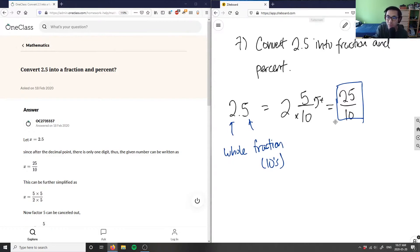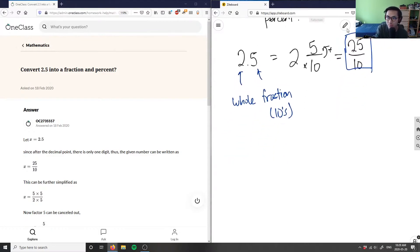Now I want to convert 2.5 into a percent. To find 2.5 as a percent, I'm going to multiply this by 100 to figure out what the percentage is. So 100 times 2.5.